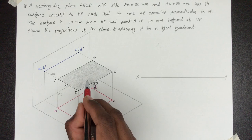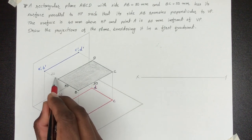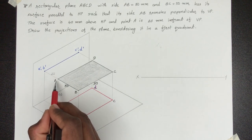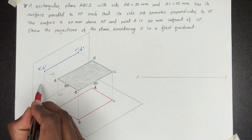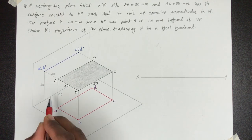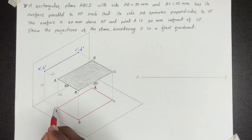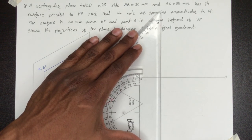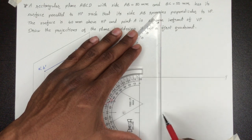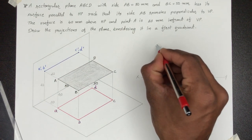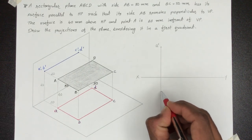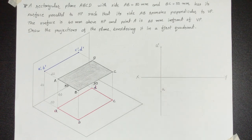Plane ABCD का front view और top view draw करने के लिए सबसे पहले हम point A की position mark करेंगे. अगर हम rectangle ABCD को front से observe करें तो A का front view A' हमें horizontal plane से 40 mm above मिलेगा, और इसका top view vertical plane से 20 mm के distance पे होगा. तो हम यहाँ पे A' और A को XY के साथ mark कर देंगे — XY से 40 mm above A' mark करेंगे और XY से नीचे 20 mm पे point A mark करेंगे.